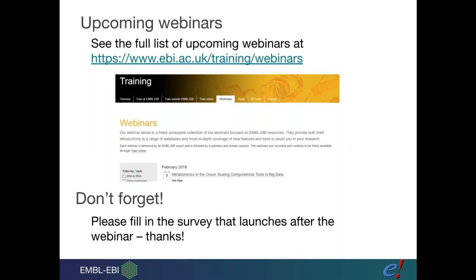Q&A: On VEP input strand — VEP assumes forward strand alleles by default. If your alleles are from the reverse strand, you should indicate this. The Ensembl default format has a plus/minus column for this; VCF is always forward strand by convention, as is SPDI. The variant identifier column (e.g., var1, var2) can be any label — a real RS ID, cosmic ID, or something made up — it just makes results easier to read. The feature strand column in results indicates the strand of the feature hit (e.g., +1 means the transcript is on the forward strand), which is distinct from the variant's strand.